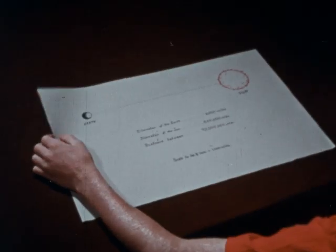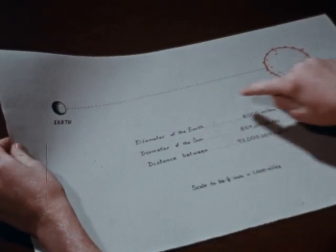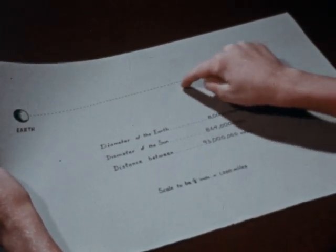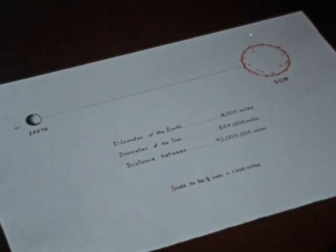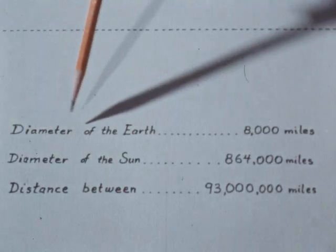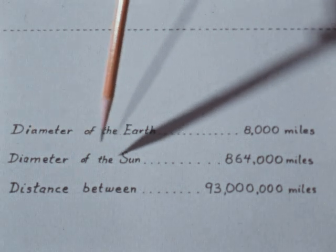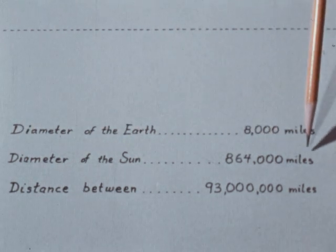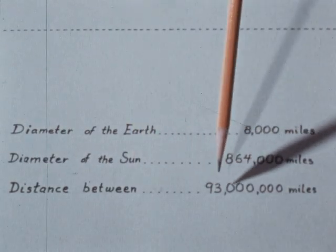For his school project, Jim is preparing to construct a scale model of the Earth, the Sun, and the distance between. The sizes and distances are shown on this chart. The diameter of the Earth is about 8,000 miles. The diameter of the Sun is about 864,000 miles. And the distance between them is about 93 million miles.